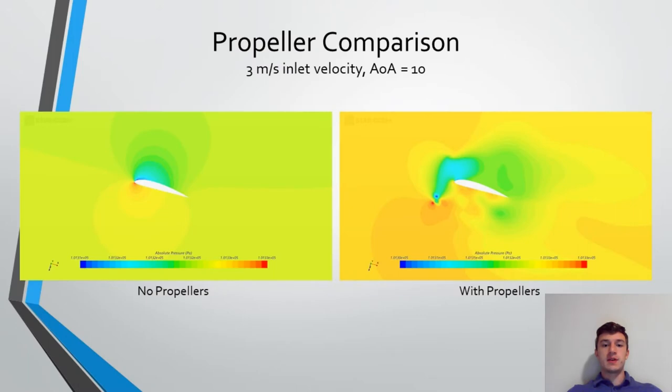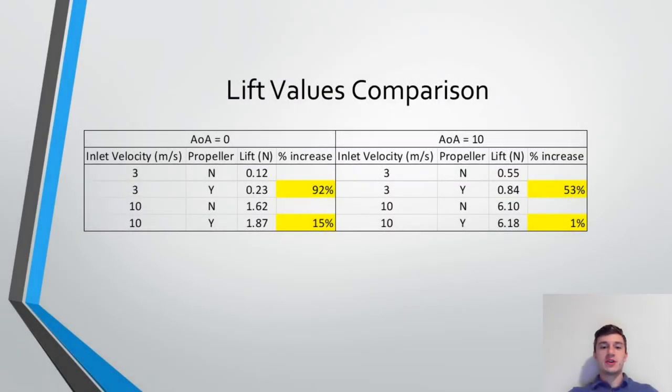Here is a side-by-side comparison of the wing at 3 meters per second incidence velocity and 10 degree angle of attack with and without propellers. Note the increased pressure distribution along the bottom of the wing modeled with propellers on the right. As seen in the chart above, the propellers have the greatest lift improvement at low velocity and low angle of attack, almost double of the case without propellers. This demonstrates the benefit in reduced time and runway distance required to take off for DEP equipped vehicles.